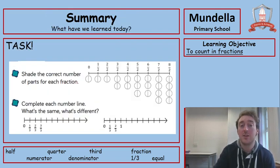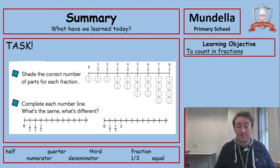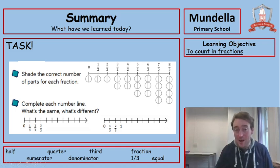Right. Our summary then. What have we learned to do? Here we have learned how to count in fractions. And I'm going to leave you with two final things to do for this lesson. So, the first one, says shade the correct number of parts for each fraction. And we've got the fractions above, just here. So, we would have to shade the correct amount of parts that are our numerators. Okay. Then it says, complete each number line. What's the same? What's different?